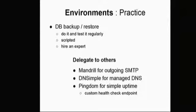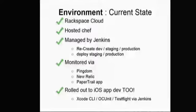Another really important thing was making sure we did DB backups and restores frequently to get data into a test environment. We also like the idea of delegating to people who do things better than us, like SMTP and DNS. The current state is that now everything's running in the Rackspace cloud, it's reproducible, we use Jenkins to push everything, it's all push-button, and it's all monitored by other people who let us know what's going wrong.